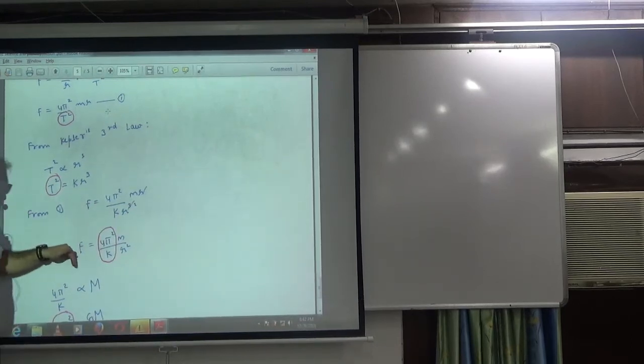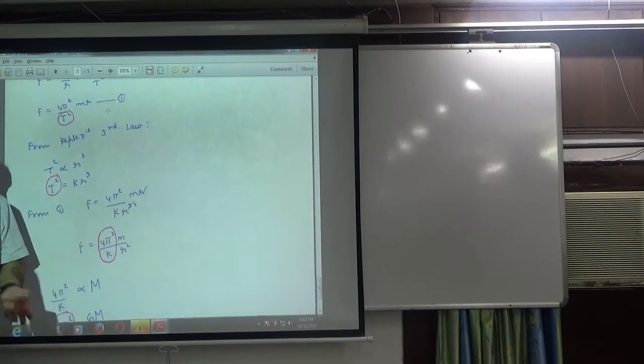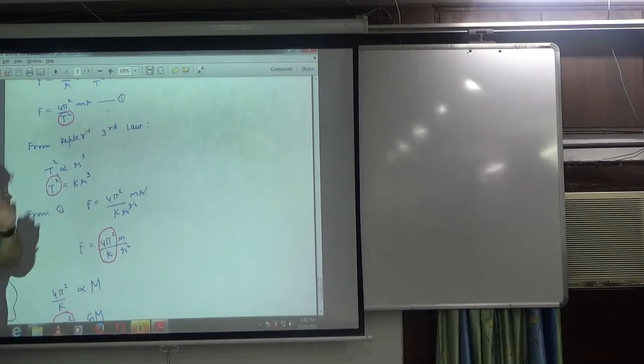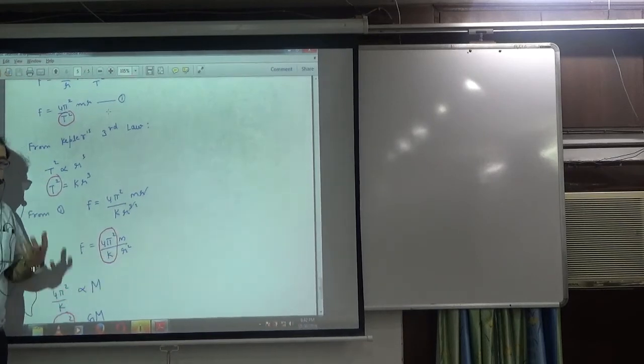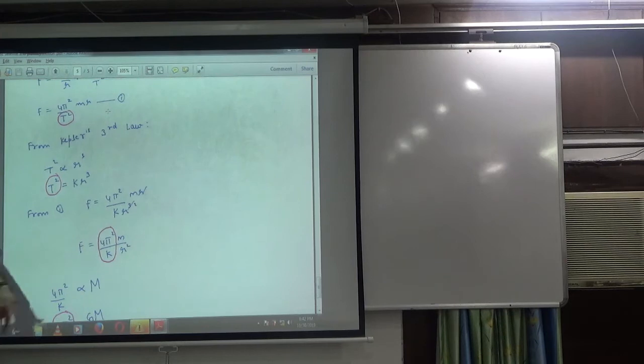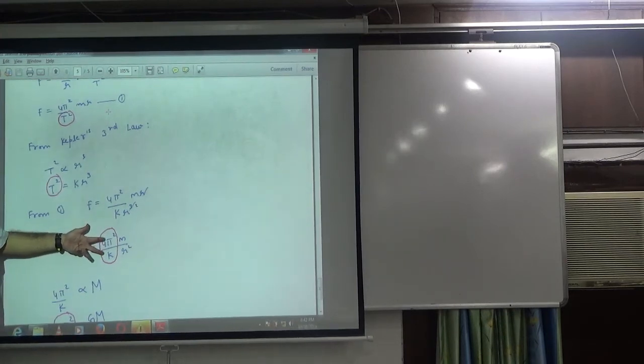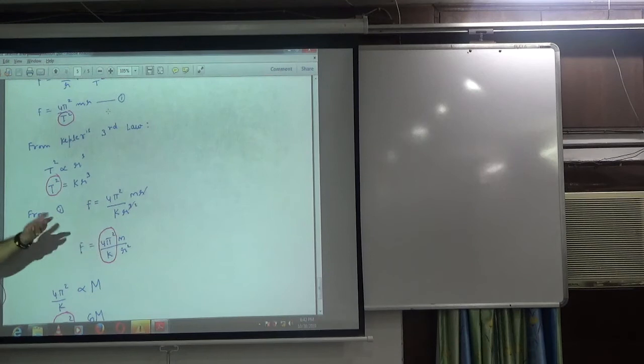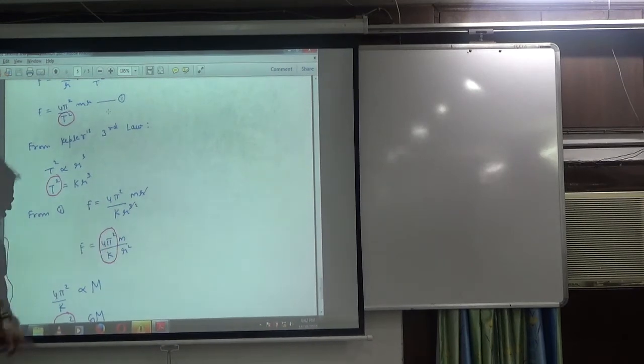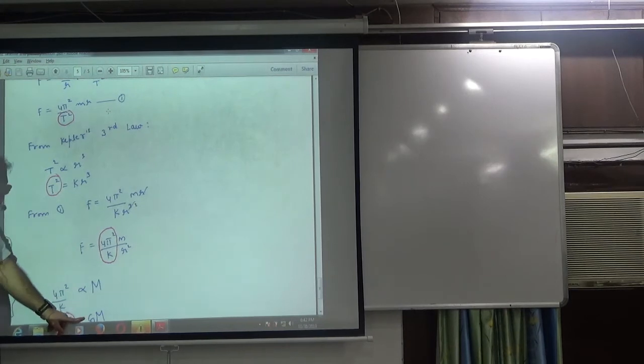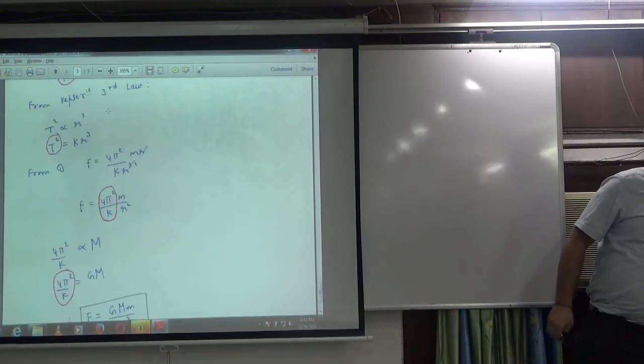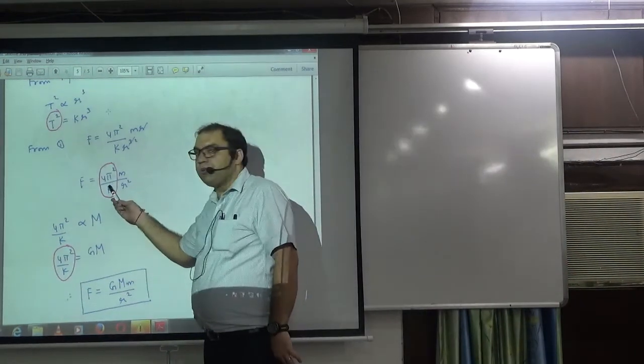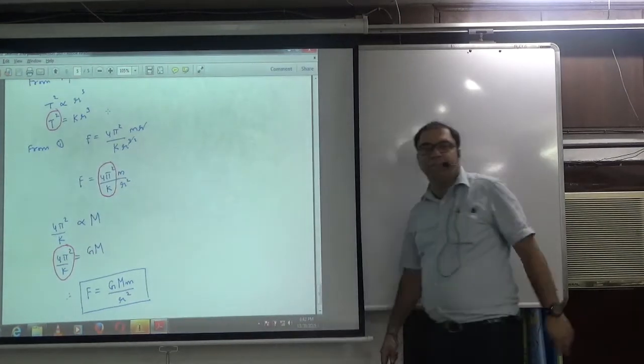This force is the force of attraction that provides the centripetal force. The force will depend on the planet's mass, the distance between Sun and planet, and the Sun's mass. We say the constant is 4π²/K, which includes the mass of the Sun. This constant is capital G. So 4π²/K = GM_sun, giving us GMm/R². This proves the formula.